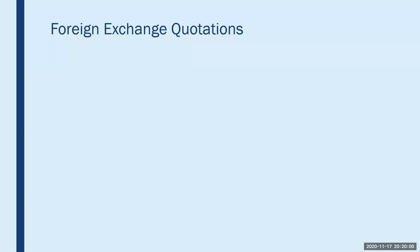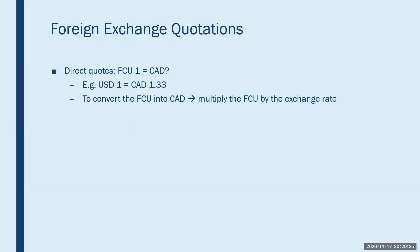Foreign exchange quotations can be available in direct quotation form, where one unit of the foreign currency is expressed in equivalent Canadian dollars. For example, one US dollar can be expressed as 1.33 Canadian dollars. If we were to convert a certain number of US dollars into Canadian dollars, we would simply multiply the US dollars by the exchange rate. So if we had to convert 100,000 US dollars into equivalent Canadian dollars, we would multiply 100,000 by 1.33 to get $133,000 Canadian.